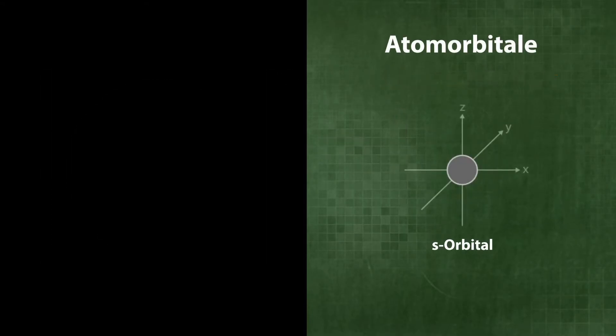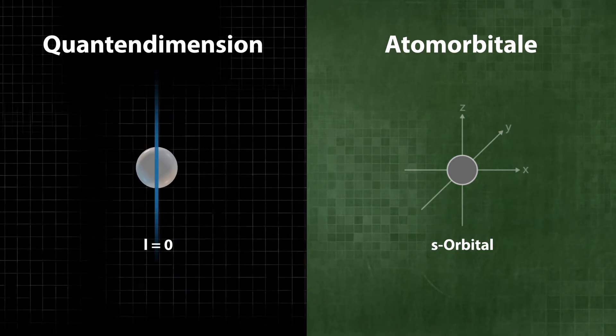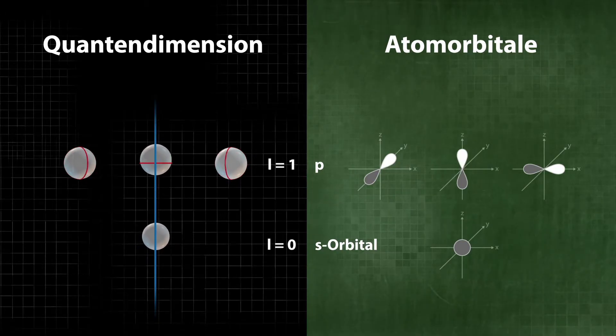The s orbital is based on the vibration without nodal lines. The p orbital is based on the vibration with one nodal line, thus l equals one.